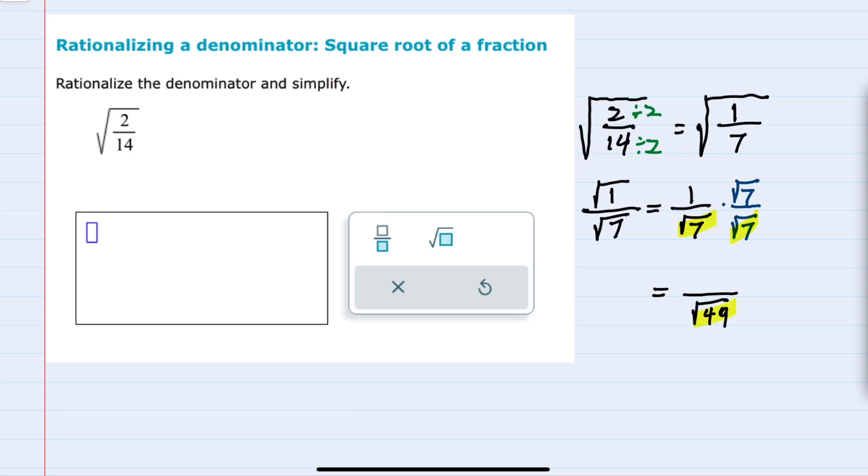But before I do that, in the numerator 1 times the square root of 7 is the square root of 7. This denominator simplifies. The square root of 49 is 7.